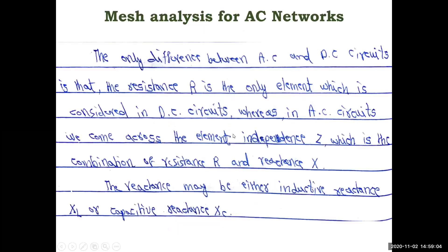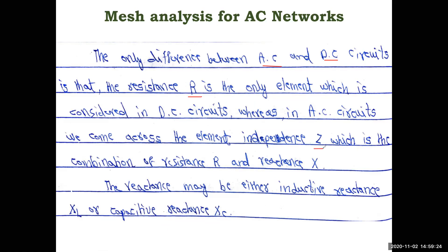For mesh analysis of AC networks, the only difference between AC and DC networks is that resistance R is the only element considered in DC circuits, whereas in AC circuits we come across the element impedance Z. So instead of resistance R we have impedance Z, which is the combination of resistance and reactance X. It is written as Z = R + jX, where X is the reactance and R is the resistance. In DC networks the reactance term is zero, so only R remains.